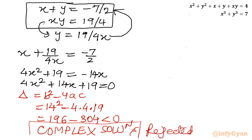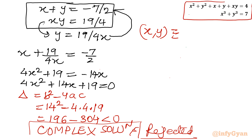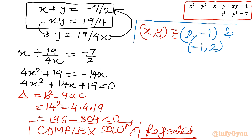So the only real solutions for the given system are x, y ∈ {(2, −1), (−1, 2)}. This is our ultimate solution set. I hope you liked this video. Thank you so much for watching. Do not forget to like, share, and subscribe. Bye-bye till the next video friends, good luck and take care of yourself.